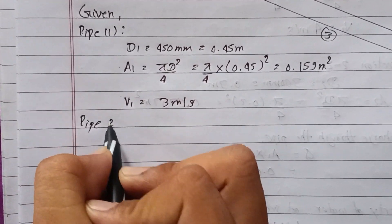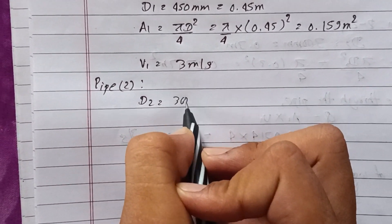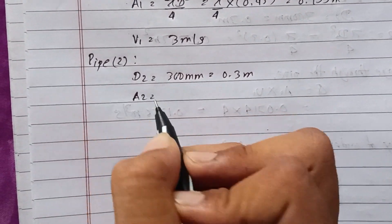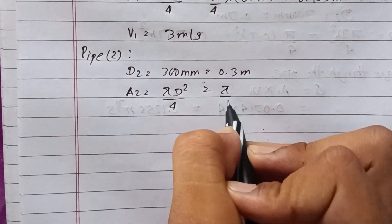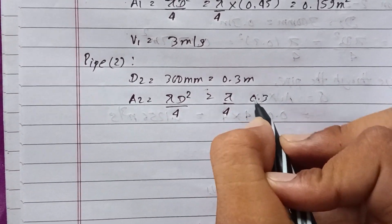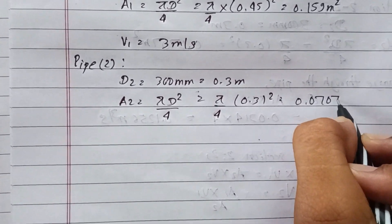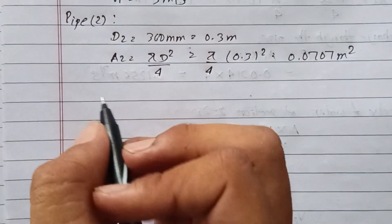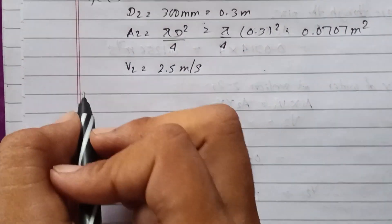For Pipe 2, the diameter D2 equals 300 mm, which is 0.3 meters. The area A2 equals pi times D2 squared divided by 4, which is pi over 4 times 0.3 squared. The answer is 0.0707 meters squared. The velocity V2 is 2.5 meters per second.